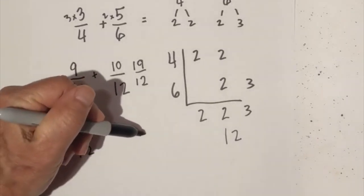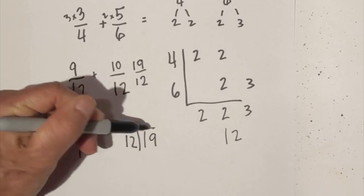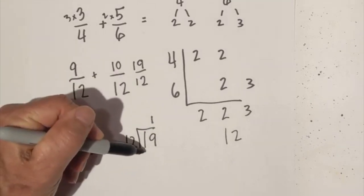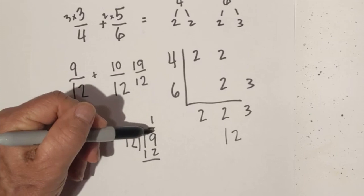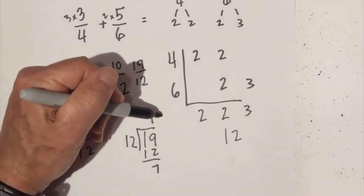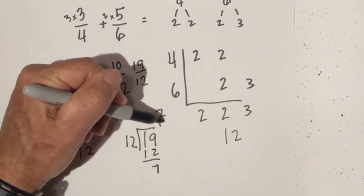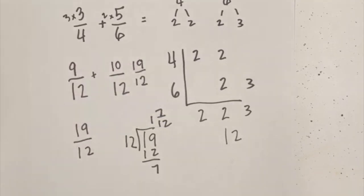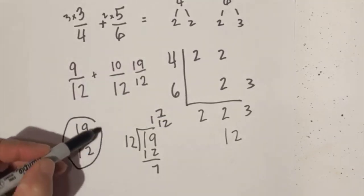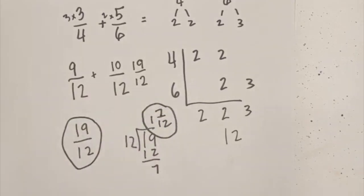You can take 19 divided by 12. That goes one time, and 19 minus 12 is seven. So that is one and seven twelfths. So the final answer is either 19 twelfths or one and seven twelfths.